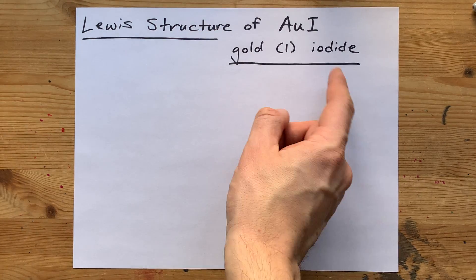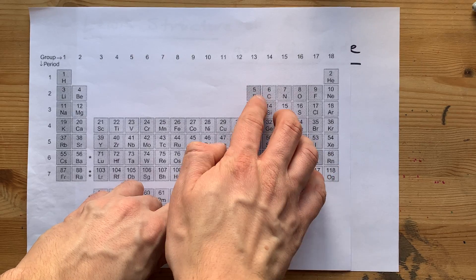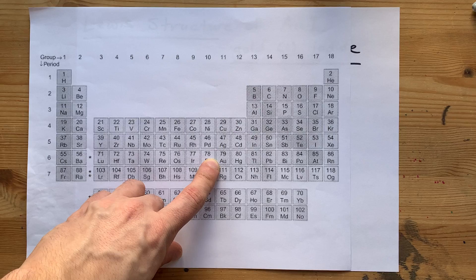Lewis structure of gold 1 iodide. Gold is a metal. I know that because it comes from the left-hand side of the staircase on the periodic table.